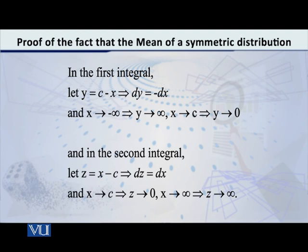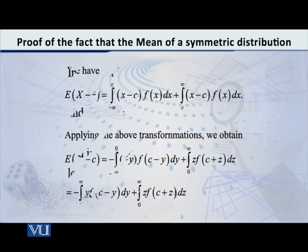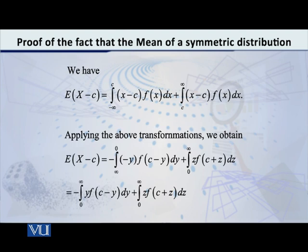Now we apply these transformations into the integrals. As you can see on the screen, the first integral becomes: integral from infinity to 0 of (minus y) times f(c minus y) dy. The second integral becomes: integral from 0 to infinity of z times f(c plus z) dz. Now, interchanging the limits of the first integral introduces a minus sign, so it becomes: minus the integral from 0 to infinity of y times f(c minus y) dy, plus the integral from 0 to infinity of z times f(c plus z) dz.